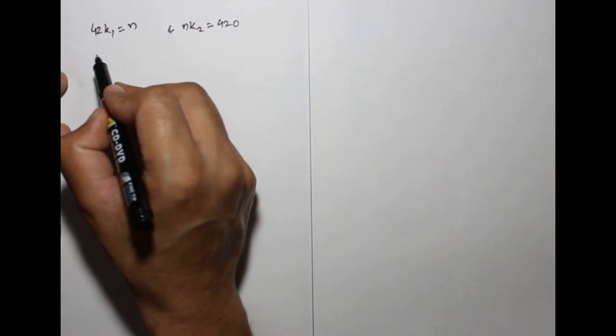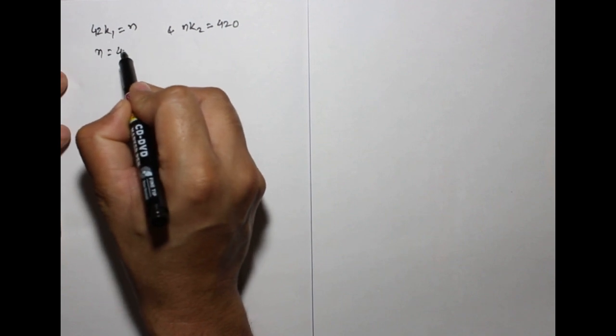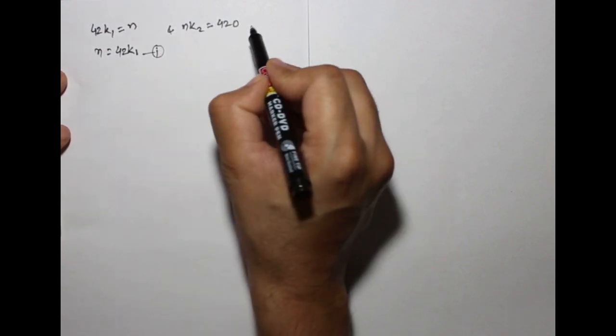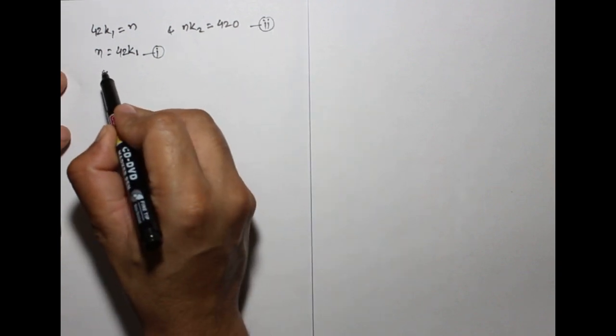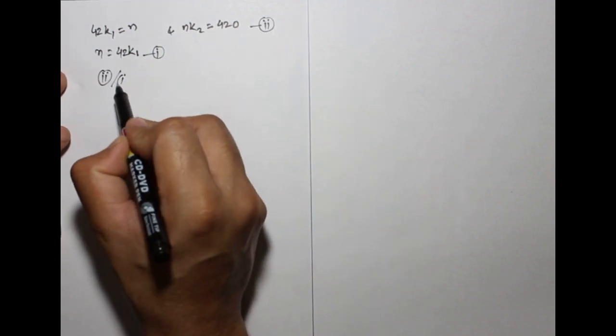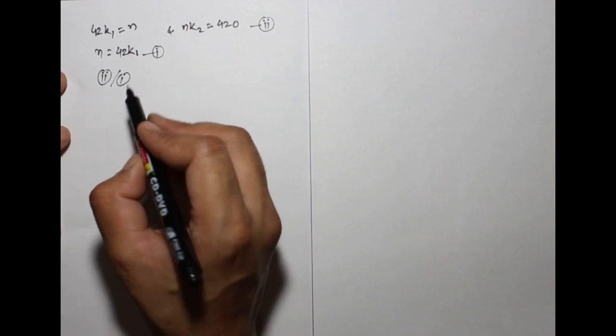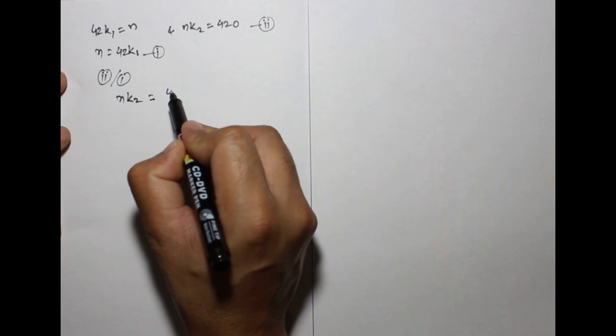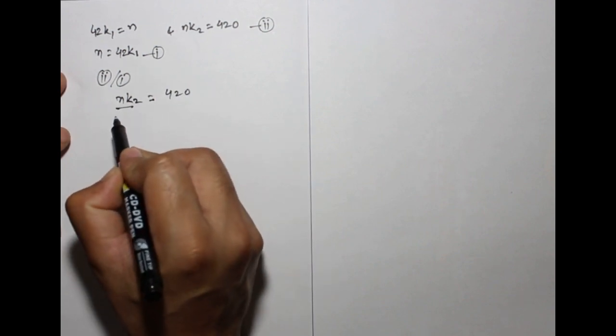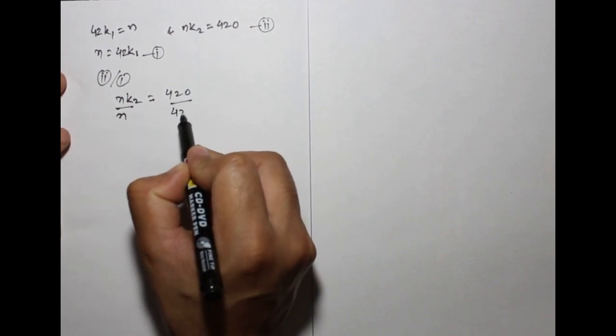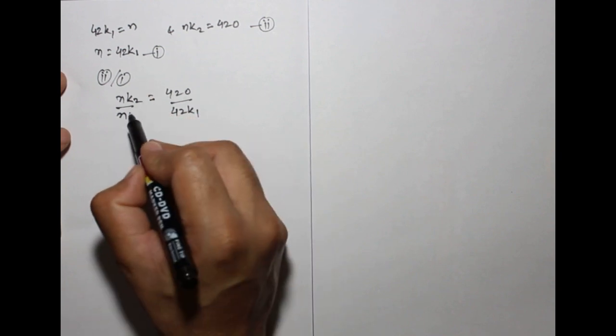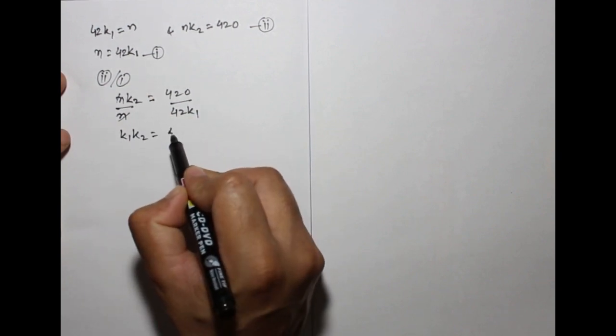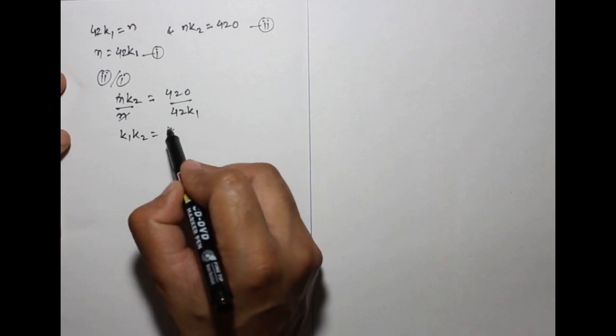We can write n equals to 42k1, this is equation 1, and the second equation. Now divide equation 2 by 1. So n k2 equals to 420 divided by 42 k1, this gives k1 times k2 equals to 10.